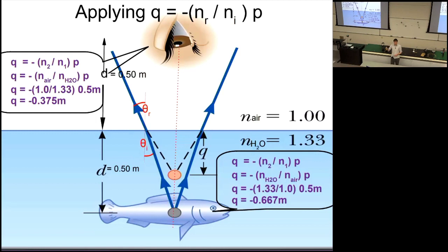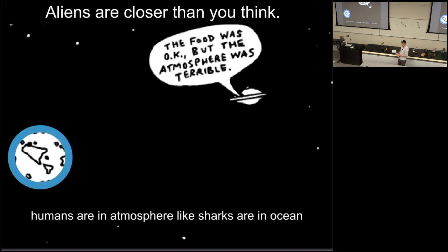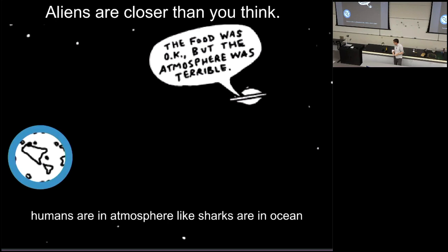The magnification is always one in single refraction at a planar surface. The shark, living in water with refractive index 1.33, sees humans further away than they are. Analogously, we live in the atmosphere — a higher refractive index than vacuum — so we see distant objects like aliens slightly further away than they actually are.